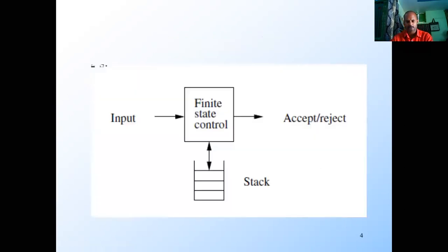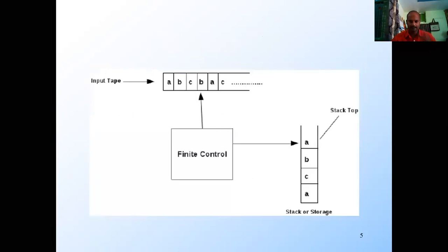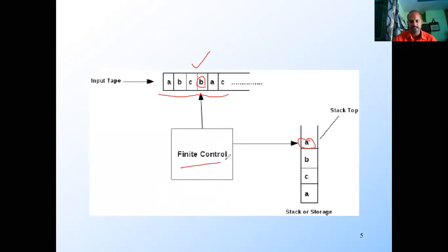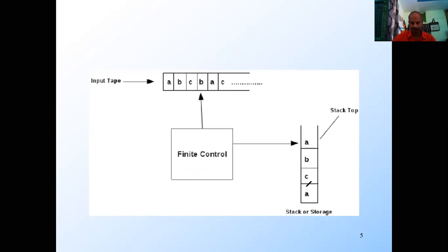Here observe this — this is the pushdown automata. Some people will write the pushdown automata diagram like this. This is the input tape with the input symbols. After consuming the input symbol and current stack top, the finite control will take the decision: either it will move to the next state, remain in the same state, or move to more than one state because it is an epsilon-NFA.